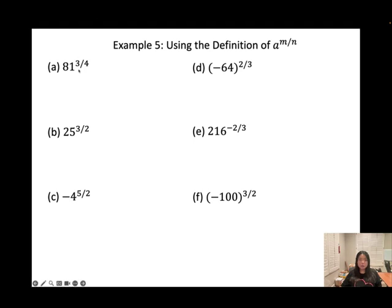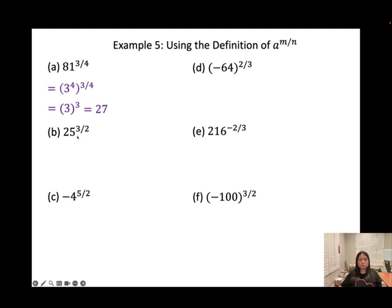Example 5a: 81 to the power of 3 over 4. This is the fourth root of 81. Rewrite 81 as 3 to the power of 4. n is even so 81 must be greater than 0 — it is, so we're good. Cancel the 4 with 1 over 4, leaving 3 to the power of 3, which equals 27. For b, 25 to the power of 3 over 2: rewrite as 5 squared to the power of 3 over 2, cancel the 2, giving 5 to the power of 3, which is 125.